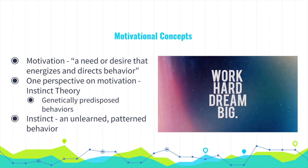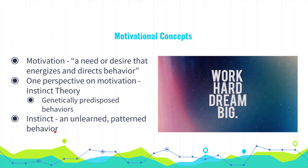There are several perspectives from which to view motivation. One is the instinct theory, which focuses on how genetically predisposed behaviors can motivate us to behave in certain ways. An instinct is an unlearned patterned behavior — there must be a fixed pattern of the behavior throughout a species, and it must not have been learned. While the instinct theory is mostly a failure, it is valid that genes do predispose species toward acting in certain ways.